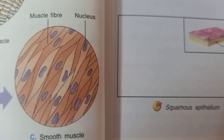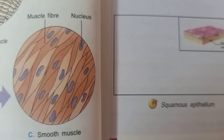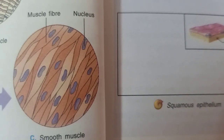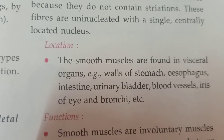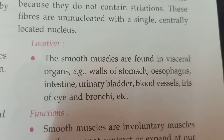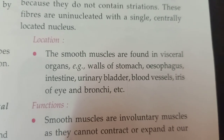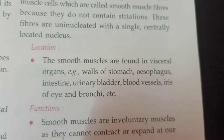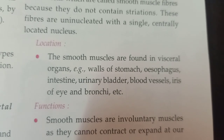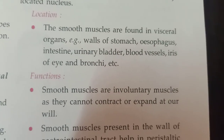Here is the diagram of smooth muscles. You can see the nucleus and the muscle fibers, and they are not in a straight line — that is why they are known as unstriated or involuntary muscles. Smooth muscles are found in visceral organs, for example the walls of the stomach, esophagus, intestine, urinary bladder, blood vessels, iris of the eye, and bronchi.